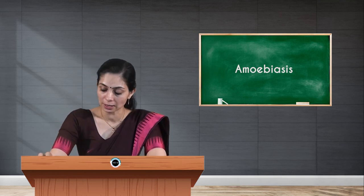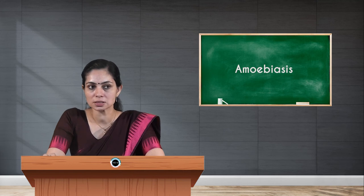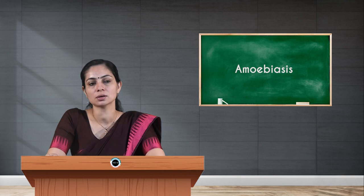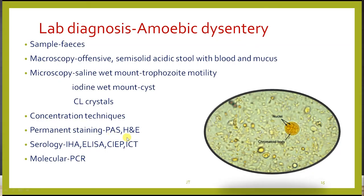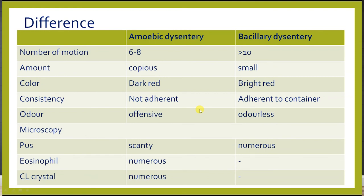Amoebic abscess most commonly occurs in the liver, where anchovy sauce-like pus consisting of necrotic hepatocytes is found. For lab diagnosis of amoebic dysentery, the sample collected is feces — macroscopically offensive, semi-solid, with blood and mucus. Microscopically, saline wet mount shows trophozoite motility and iodine wet mount shows cysts with Charcot-Leyden crystals. If negative, concentration techniques and permanent staining with PAS or hematoxylin and eosin can be used. Serological tests include immunohemagglutination, ELISA, counter immunoelectrophoresis, and immunochromatography. PCR is the molecular method available. Microscopically, amoebic dysentery shows fewer pus cells, numerous eosinophils, and numerous Charcot-Leyden crystals compared to bacillary dysentery.